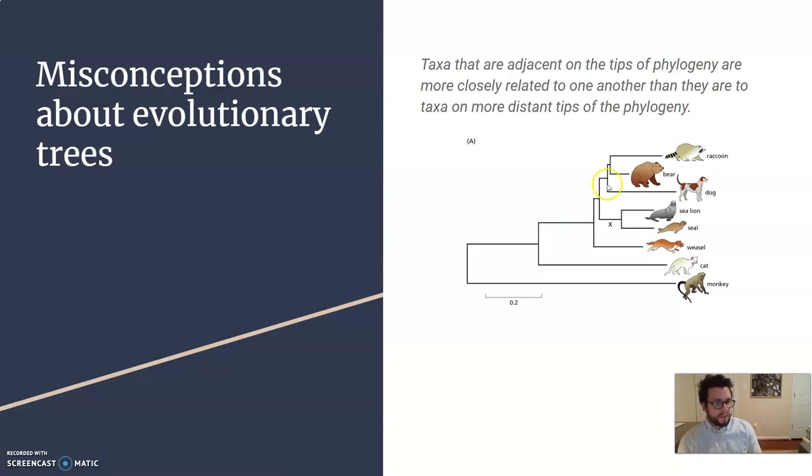Grouping them together based on certain characteristics. Now, these branching points here would represent common ancestors that these guys have. So, even though this branch here gave us the raccoons and the bears versus the dog, that doesn't mean that since the dog branched off here that it evolved from a bear or a raccoon.